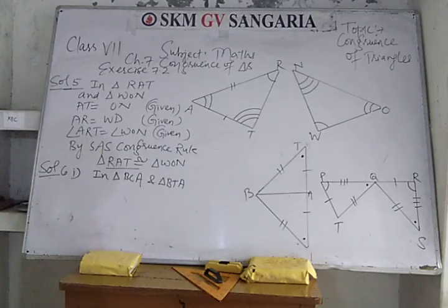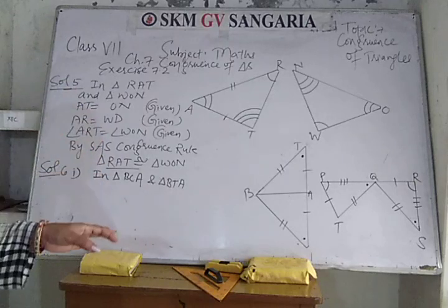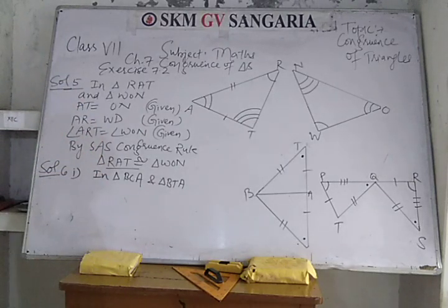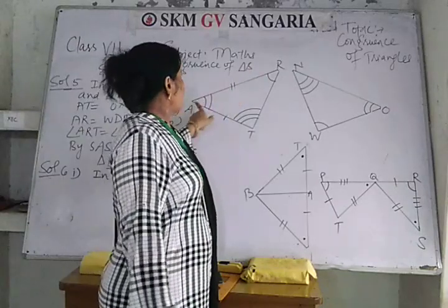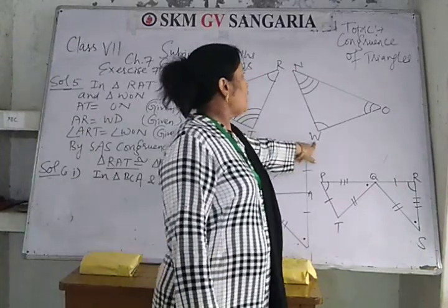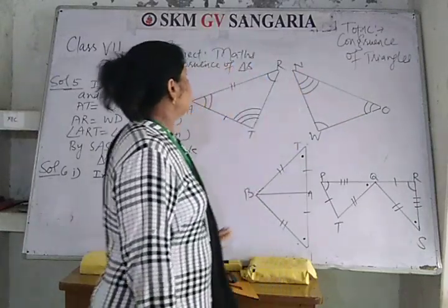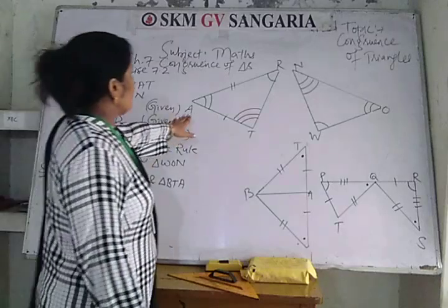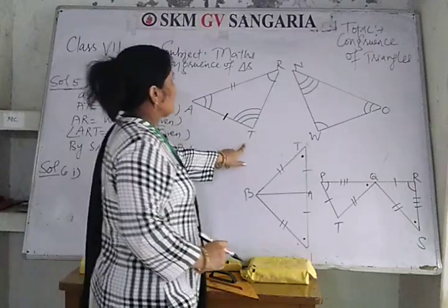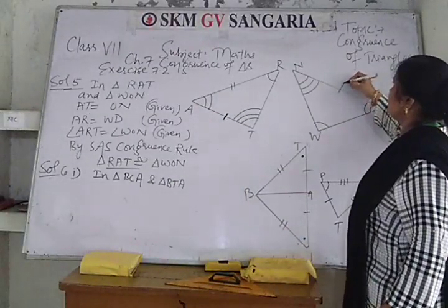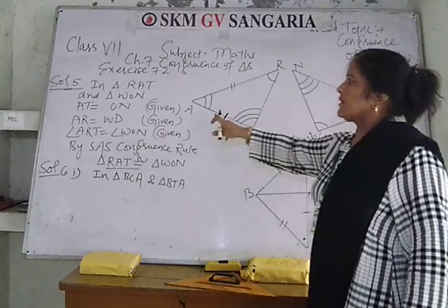In the figure, the two triangles are congruent and the corresponding parts are marked. Can we write triangle RAT is congruent to triangle WON? You are given here: AT is equal to ON — this is given to us.